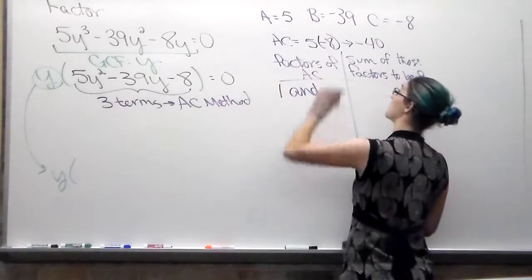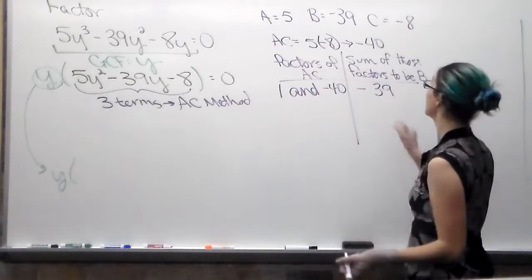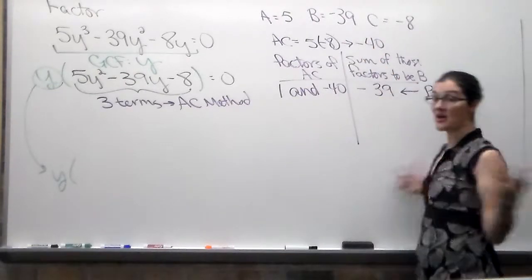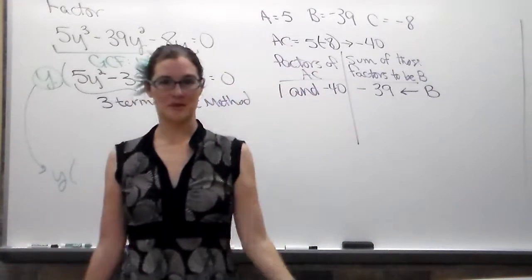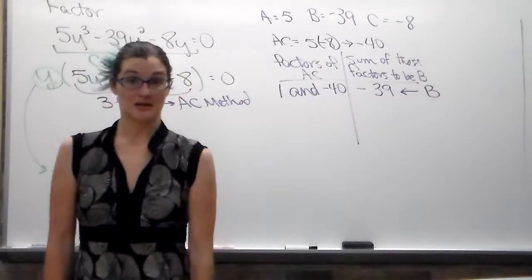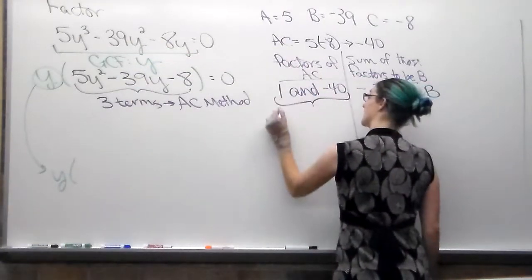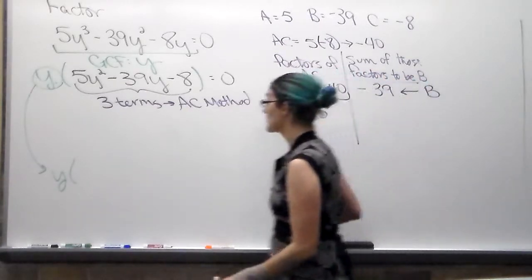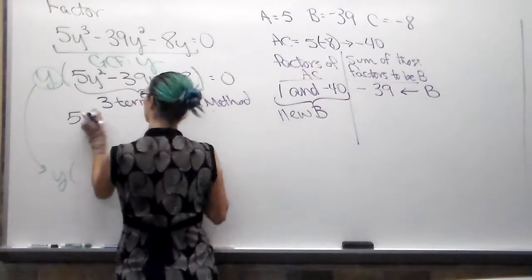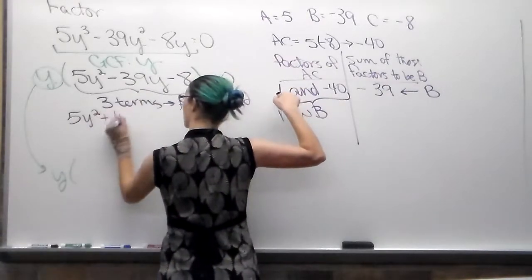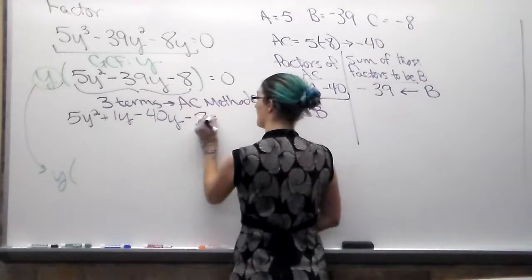What are factors of negative 40? One and negative 40. If I add those together, I get negative 39. Is that B? Oh, nice. Awesome. It's not always going to happen on the first try. It's always nice when it happens on the first try, but it doesn't always happen on the first try. I like to always start with one because people who did guess and check, they normally don't start with one. So we're going to do one and negative 40 is going to become my new B. So when I come back over here, I'm not focused on green. Green's in my answer. I have 5y² plus 1y minus 40y minus 8 equals 0.